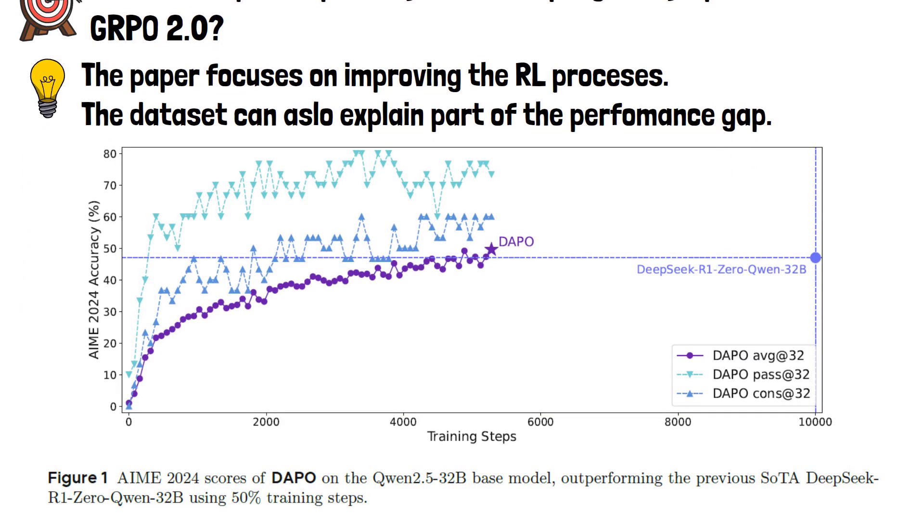The following figure from the paper shows that DAPO achieves 50 points on the AIME 2024 benchmark, which includes problems from a challenging high school math competition. This outperforms the DeepSeek R1 47 points using the same base model, but with only 50% of the training steps compared to DeepSeek R1.